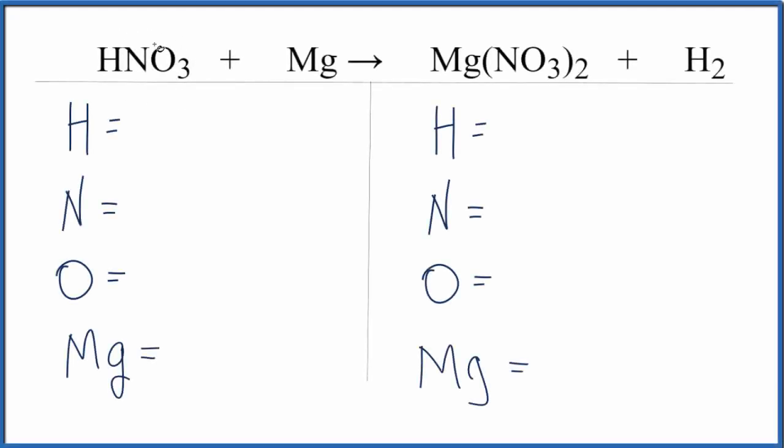In this reaction we have nitric acid, HNO3, plus magnesium, Mg. It's a single displacement reaction. The Mg comes and pushes the H out, and we're left with Mg(NO3)2 and hydrogen by itself.